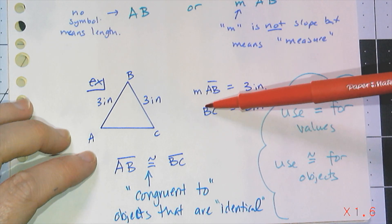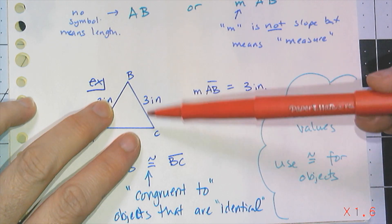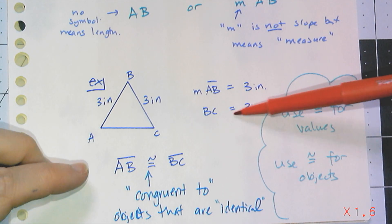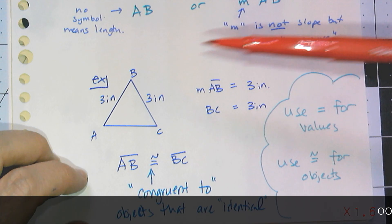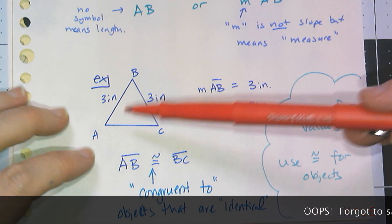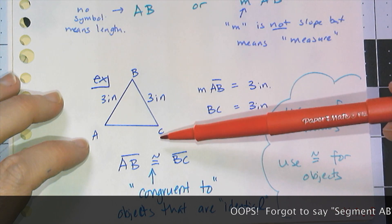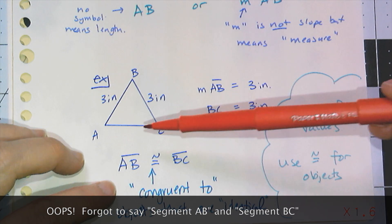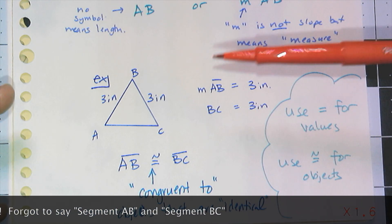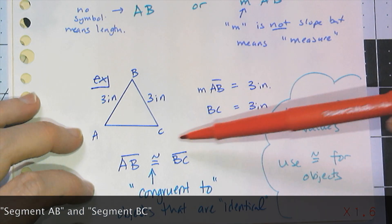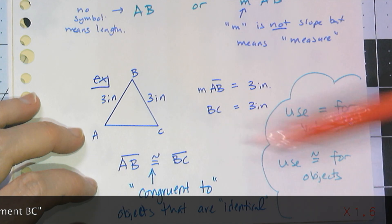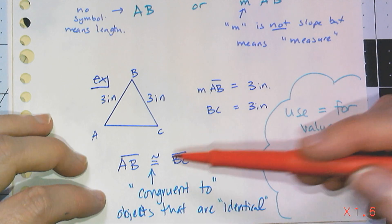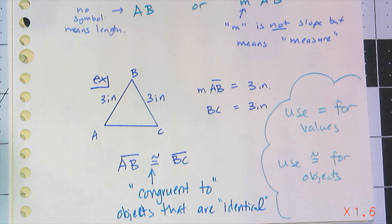I can say BC, which is the distance between points B and C, is three inches. I can use an equal symbol because they're numbers. But if I want to talk about the objects AB and BC, I don't use equal. I wouldn't say AB equals BC because they're objects, not values. Instead, I use an equal sign with a squiggle above it, which represents congruent to. We use this symbol when we're talking about objects that are identical.